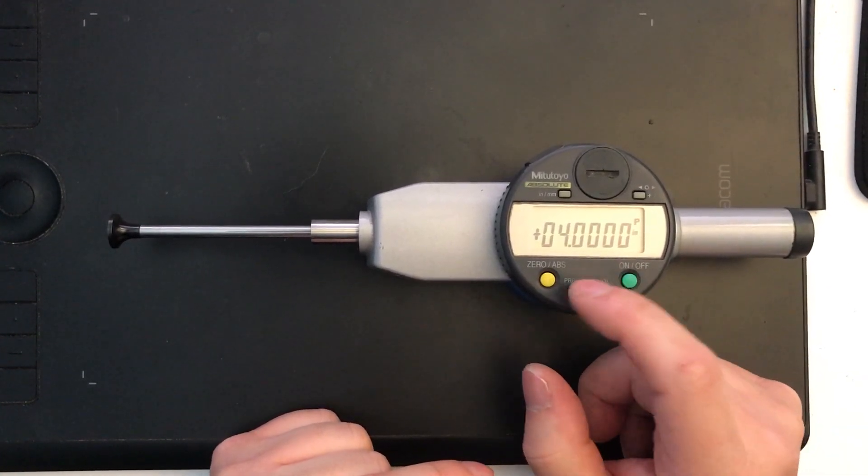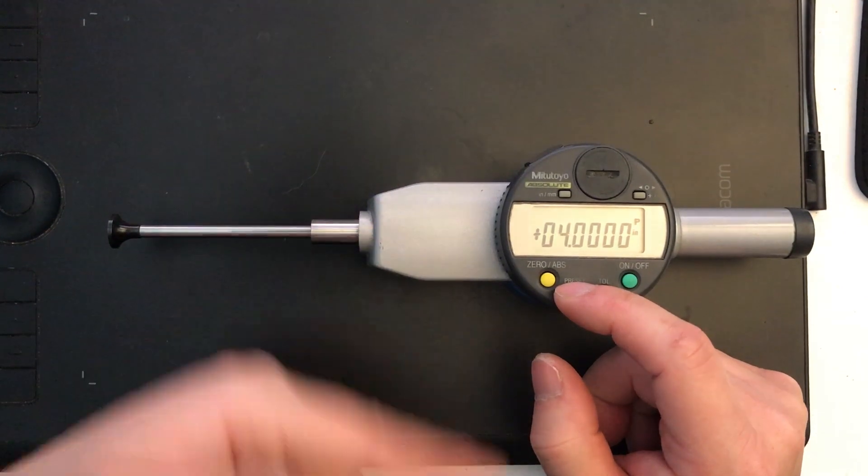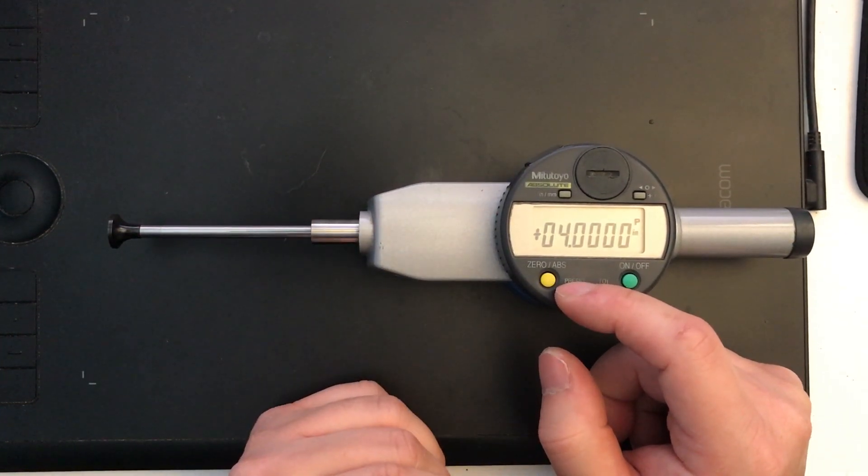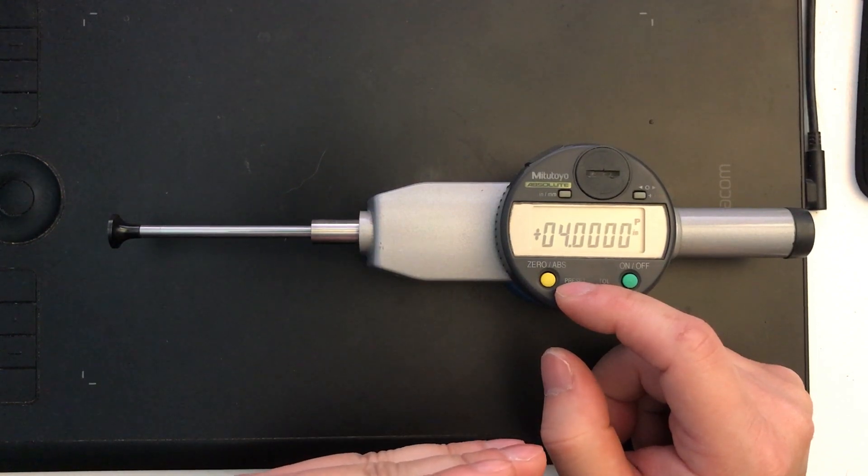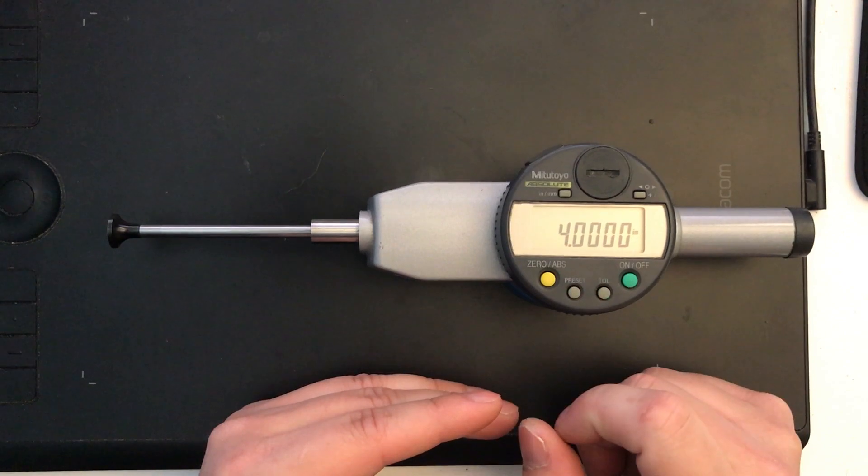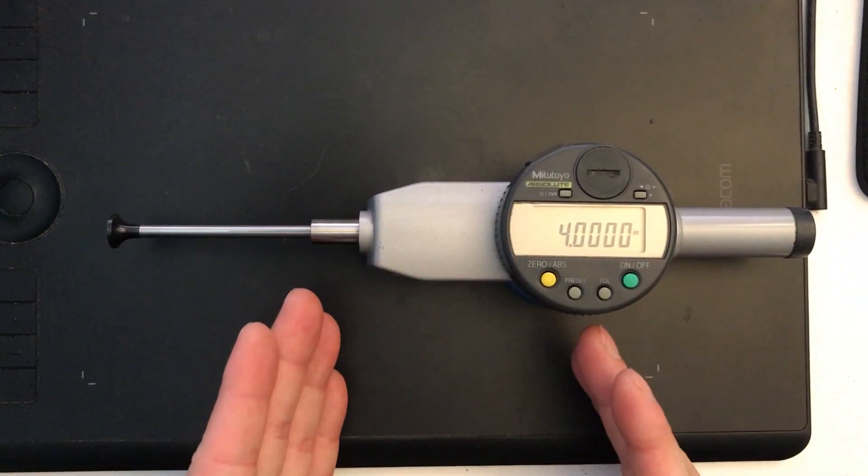Again, if you miss a number, you've got to cycle back through it. So it is what it is. In this case, I'm pressing and holding. It's advancing to the next digit. And then once the P flashes, I can then let go, hit the preset, and now you'll see it's reading four inches.